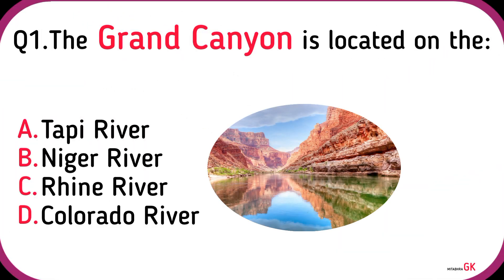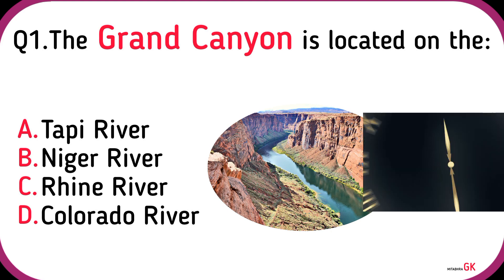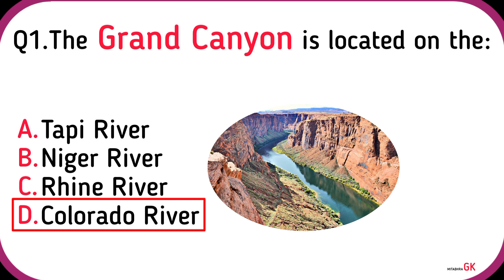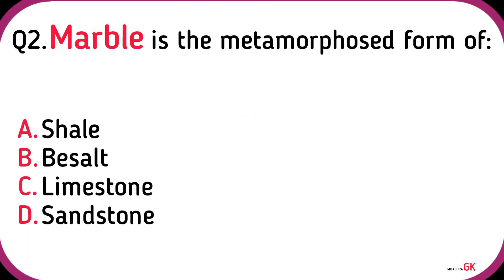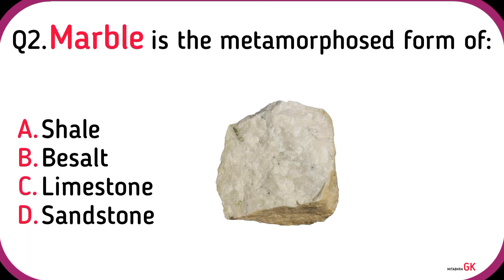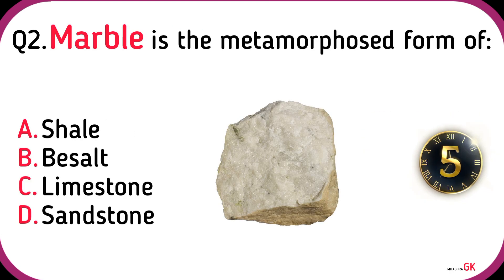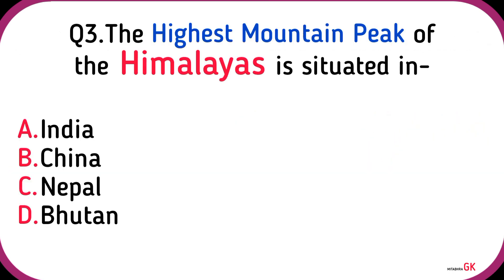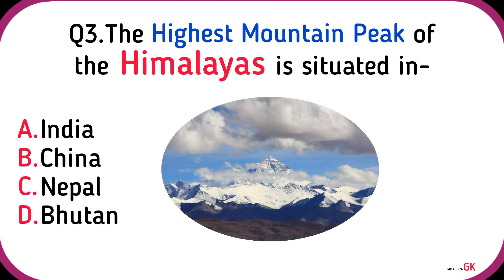The Grand Canyon is located on the Colorado River. Marble is the metamorphosed form of limestone. The highest mountain peak of the Himalayas is situated in?